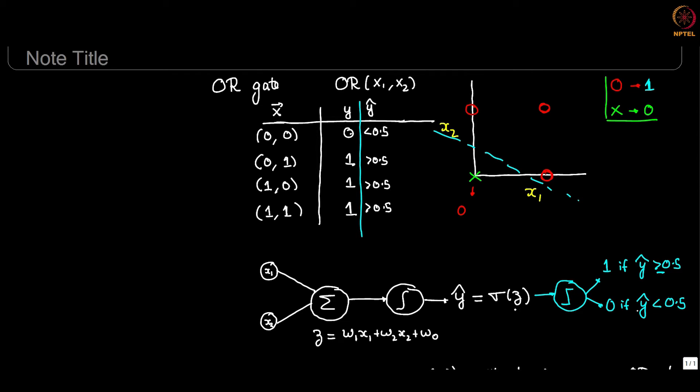Y hat is sigmoid of Z. We remember that the sigmoid function works this way. If this is Z and this is sigmoid of Z, then at 0 your sigmoid of Z is 0.5. Whenever Z is greater than 0, sigmoid is greater than 0.5. Whenever Z is less than 0, sigmoid is less than 0.5. So now let us find out what Z has to satisfy. If sigmoid of Z has to be less than 0.5, then we know that Z has to be negative. Similarly, for these three, Z has to be positive.